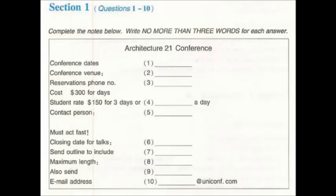Before you hear the rest of the talk, you have some time to look at questions five to ten. Professor Dawson speaking. Oh, hello. My name is John Helston. I'm an architecture student at London University. I'm here in Australia for three months, looking at energy-saving house designs.